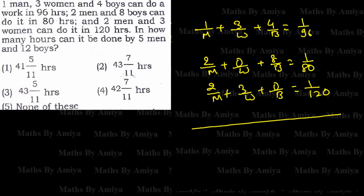And we need to find five men, zero women and 12 boys in how much time. We have three equations and we have to find the new equation. There is no need to solve for the variables. I am again repeating, we have three equations and we need to find a new equation.